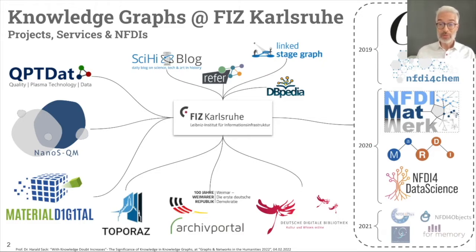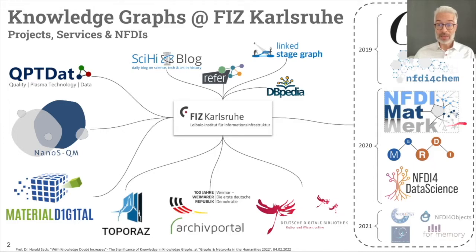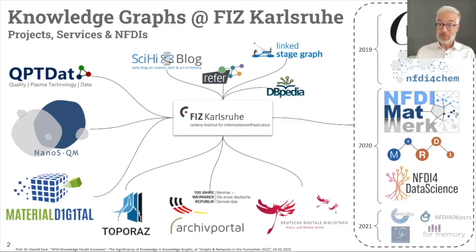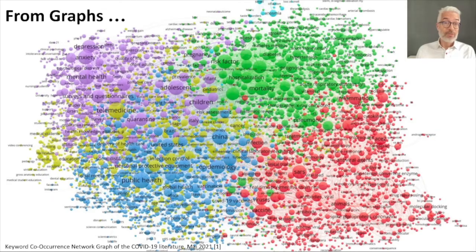What is new is a large set of projects we started running from 2019 to 2021. We have also proposed four additional ones in the realm of the so-called National Research Data Infrastructure. These are huge projects where we do research data management for different scientific domains — for example, NFDI for culture, for chemistry, for material sciences, mathematics, data science, physics, archaeology, and history science. Within these ten-year projects, split into two five-year phases, we will establish unified access to research data across all these domains — and this, of course, many times relies on knowledge graphs.